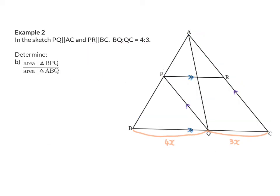In example 2, we are now asked to determine the ratio between the area of triangle BPQ and triangle ABQ. Looking carefully at these two triangles, A is not a common apex anymore — the common apex is at Q. The perpendicular height will be drawn from Q to the bases of these triangles. This means we need to focus on base BP for the green triangle and base BA for the blue triangle, and we don't have information on these yet. So before calculating the area ratio, we need to find the ratio of BP to BA.